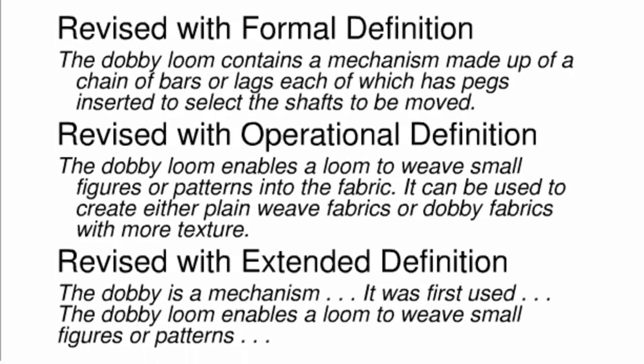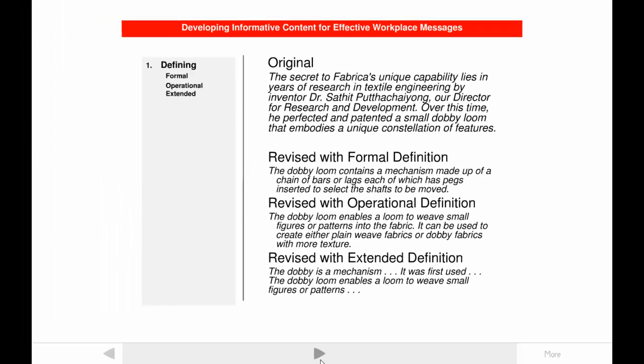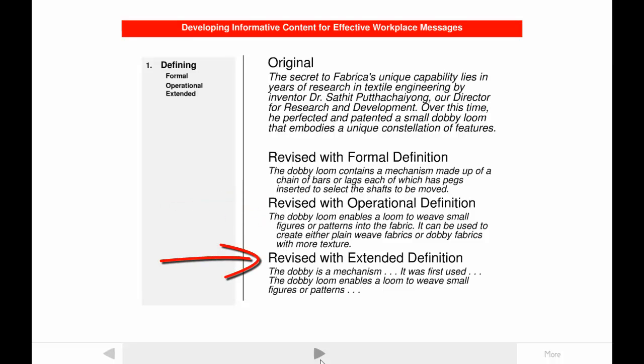There's one more type of definition called extended. The example shown here is only part of an extended definition for Dobby Loom. It might include both a formal definition, an operational definition, and lots of other content. Unlike a formal definition, which resembles a dictionary entry, the extended definition resembles an encyclopedia entry. The writer could provide an operational definition in the executive summary and an extended definition elsewhere in the document describing the business's product in greater detail.